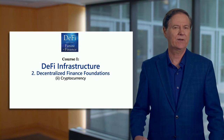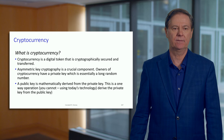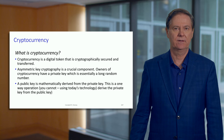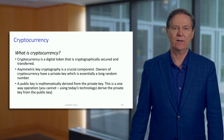Let me talk now about cryptocurrency. I've mentioned it a number of times, but I want to go into a little more detail. Cryptocurrency is a digital token — not a physical token, it's digital. It's cryptographically secured and you're able to transfer it. One important aspect of a cryptocurrency is something known as asymmetric key cryptography.